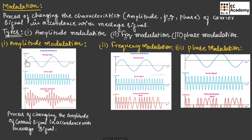As you can see in this waveform, this is the message signal and this is the carrier signal. The message signal has low frequency and the carrier signal has high frequency. Before transmitting the signal, the amplitude of the carrier signal is varied with respect to the message signal. This is the amplitude modulated signal — as you can see, the amplitude of the carrier signal is varied with respect to the message signal. This type of modulation is known as amplitude modulation.